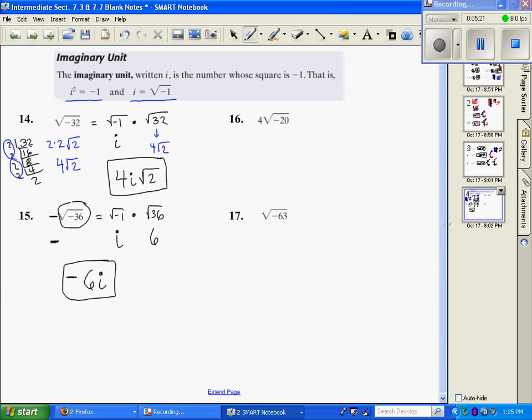Number 16, if I leave this 4 out front, and then I'm going to take this and say it's the square root of negative 1 times the square root of 20. The square root of negative 1 becomes i. And the square root of 20, let's break it down. And because my index is a 2, I need groups of 2, so that becomes 2 square root of 5.